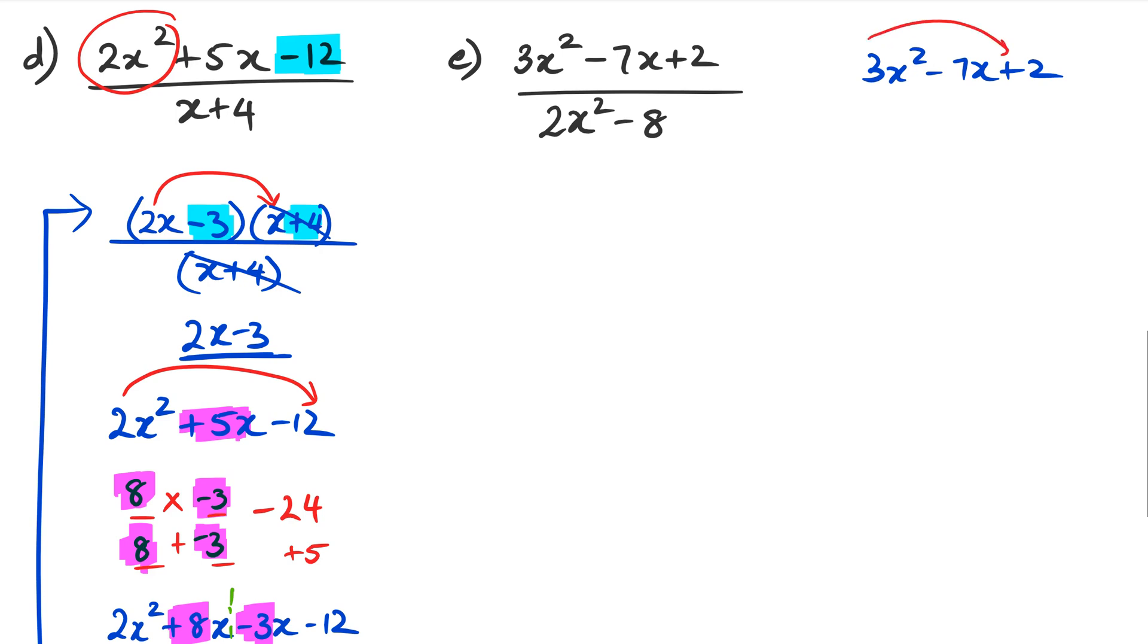So what I've got is 3 times 2, which is going to give me 6. So I'm looking for two numbers that multiply to positive 6 and two numbers that add up to negative 7. So my two numbers are going to be negative 6 and negative 1. So I'm going to write that out 3X squared minus 6X minus X plus 2. And now I'll have to split it up into 2, factorize the left-hand side. So I've got 3X as a common factor, which is going to be X minus 2.